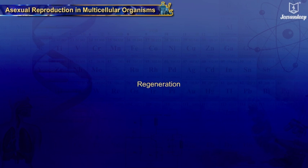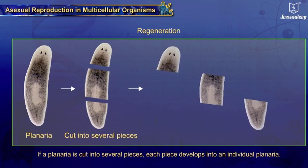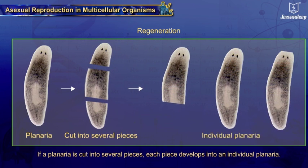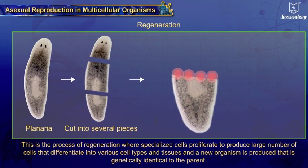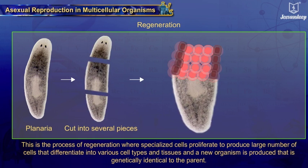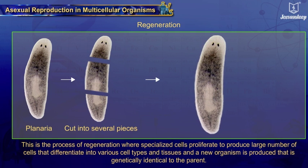Regeneration: If a planaria is cut into several pieces, each piece develops into an individual planaria. This is the process of regeneration, where specialized cells proliferate to produce a large number of cells that differentiate into various cell types and tissues, and a new organism is produced that is genetically identical to the parent.